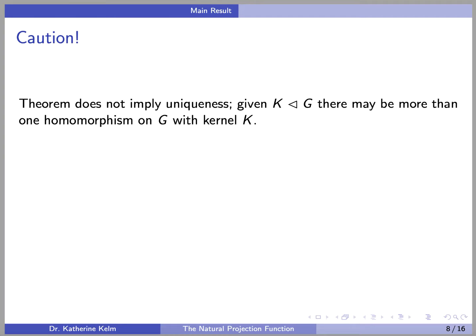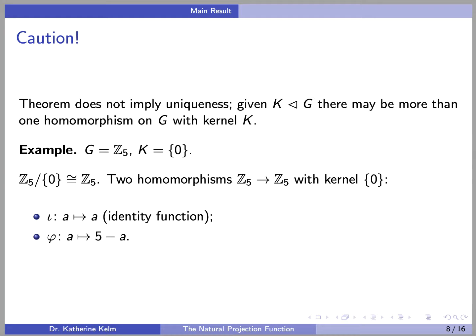One caution here: the theorem does not imply uniqueness. That is, given a normal subgroup K of G, there may be more than one homomorphism on G with kernel K, even up to isomorphism. For example, consider the group G equals Z5 and K the trivial group. Note that Z5 mod the trivial group is isomorphic to Z5. There are actually two homomorphisms from Z5 to Z5 with trivial kernel: one being the identity function, and the other being the one that takes A to 5 minus A for each A in Z5. You can double-check that both are well-defined group homomorphisms with trivial kernel.